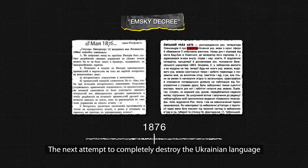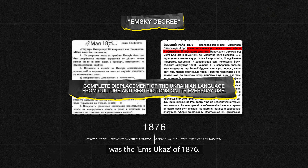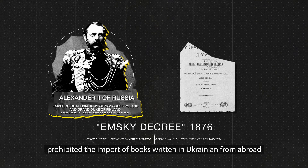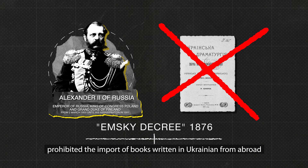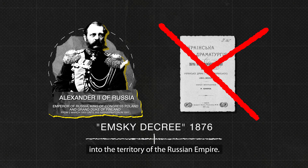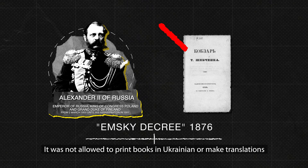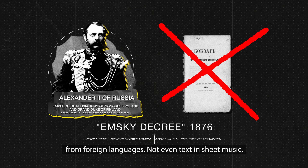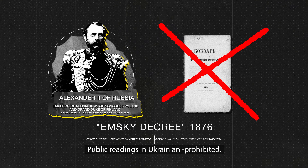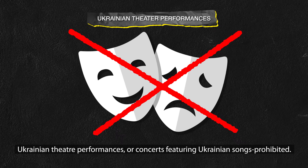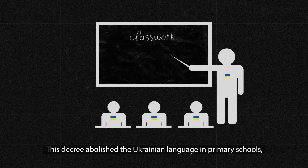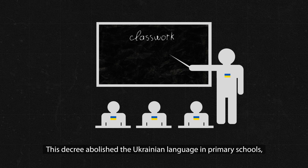The next attempt to completely destroy the Ukrainian language was the Ems Ukaz of 1876 — a secret decree of Russian Emperor Alexander II, which prohibited the import of books written in Ukrainian from abroad into the Russian Empire. It was not allowed to print books in Ukrainian or make translations from foreign languages — not even text in sheet music. Public readings in Ukrainian were prohibited. Ukrainian theater performances or concerts featuring Ukrainian songs were prohibited. This decree also abolished the Ukrainian language in primary schools, and teachers were immediately replaced by Russians.